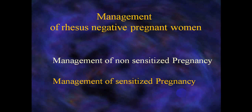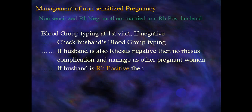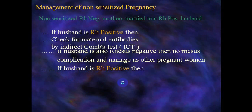Management of RH-negative pregnant women is divided into management of non-sensitized and sensitized pregnant women. For the non-sensitized RH-negative mother married to an RH-positive husband: perform blood group typing at the first visit. If the mother is RH-negative, check the husband's blood group. If the husband is also RH-negative, there is no RH complication and she is managed like other pregnant women. If the husband is RH-positive, further monitoring is required.